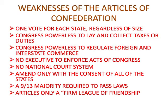There was no executive to enforce the acts of Congress — Congress was making laws but had no one to enforce them. They had no national court system; that was left up to the states. To amend the Articles of Confederation, consent from all 13 states was needed, and nine of them had to agree to pass a law. It was looked at as a league, a friendship.